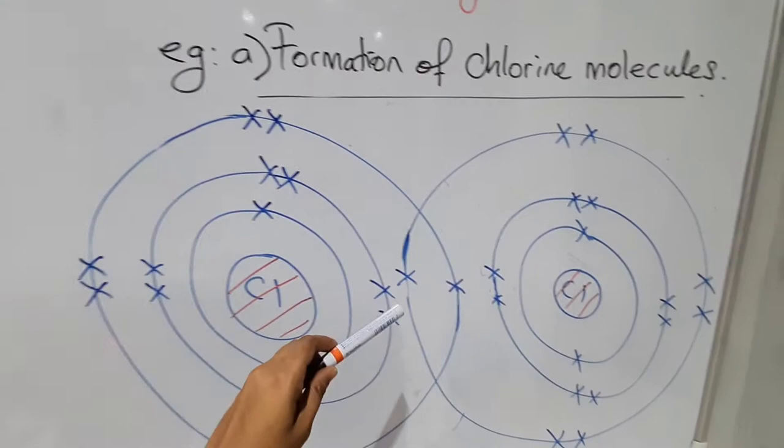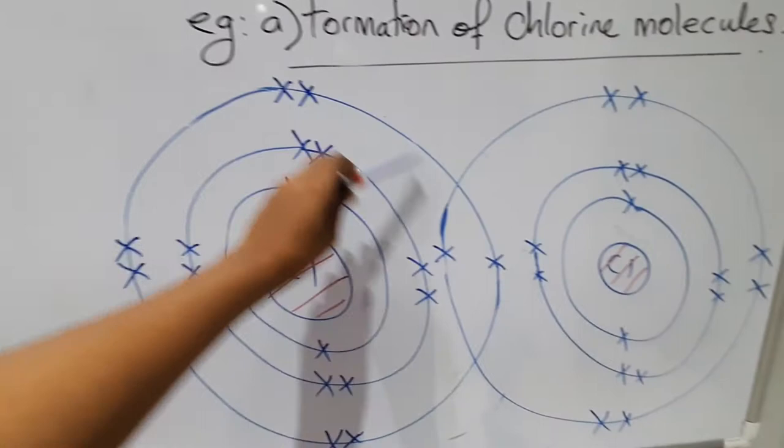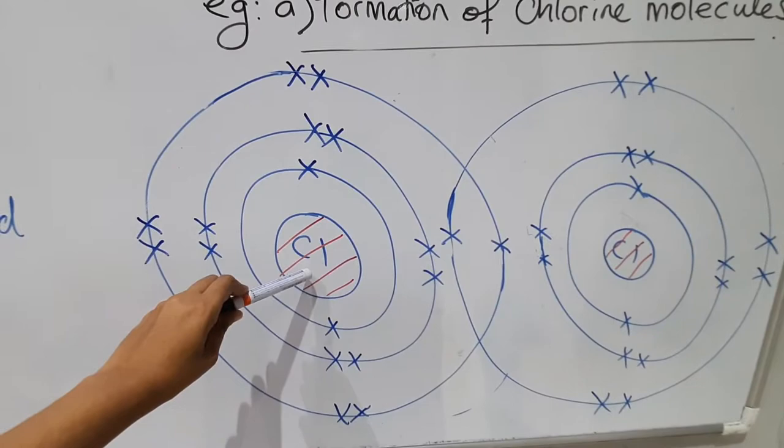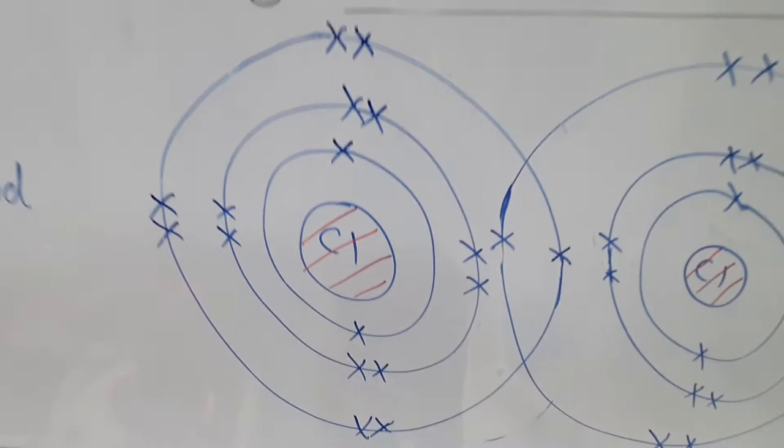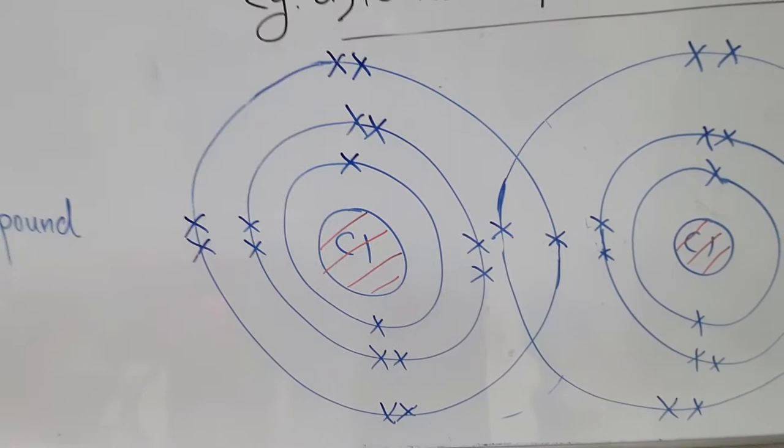Each chlorine atom will contribute one electron for sharing. Look at their valence shell — each chlorine atom has seven valence electrons. Out of seven, it's going to contribute one. So you put one at the sharing part — the overlapping part — and then go and complete the other valence electrons at the valence shell so that you won't make any mistake.